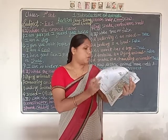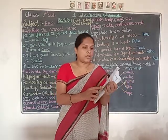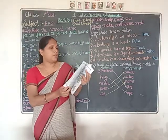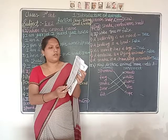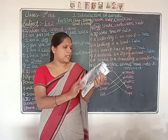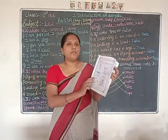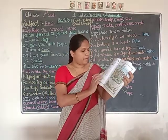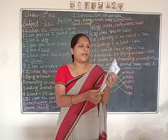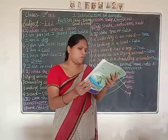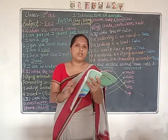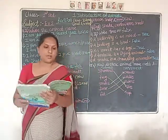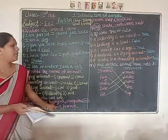Buffalo and goat should be in brown color. Swan and hen should be in yellow color. Snake and snail — crawling animals — should be in blue color. Honeybee and butterfly — insects — should be in red color. Do these colors neatly and complete the homework — read and write two times.